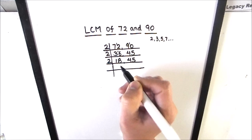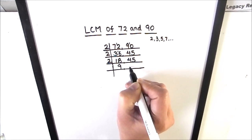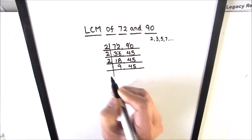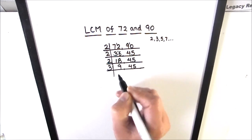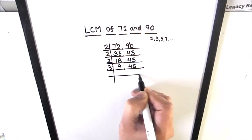Now 18 is divisible by 2, so we'll use 2 to divide 18: 2 times 9 is 18, and 45 will be as is. Now 9 and 45 both are divisible by number 3, so we'll use 3 to divide the two numbers.